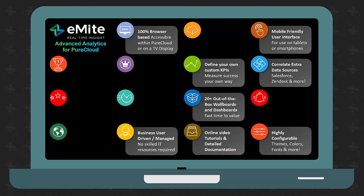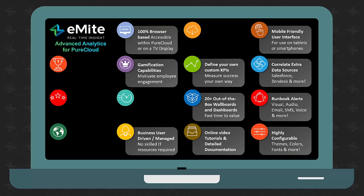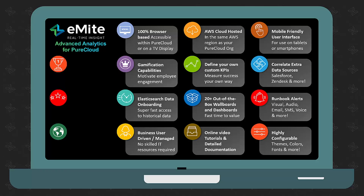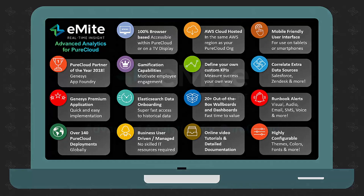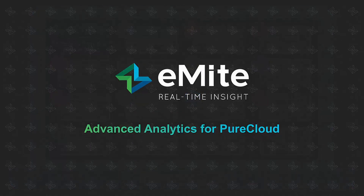You can correlate additional data sources like Salesforce or Zendesk, and add gamification capabilities to motivate employee engagement. There are Runbook alerts for visual, audio, email, SMS, voice and other alert types. It's built on Elasticsearch for super fast access to historical data, and sits in the same AWS region as your PureCloud org so data stays in region. We won the PureCloud Partner of the Year award, we're a Genesys Premium application making installation quick and easy, and we have over 140 PureCloud deployments globally. This is Advanced Analytics for PureCloud by Emite — ask for a demo today.